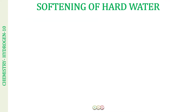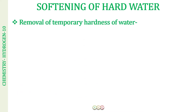We are now going to discuss the softening of hard water — converting hard water into soft water by removing the hardness-causing salts. From this point, everything is going to be very important and new for you, especially for competitive examinations. The first method to remove temporary hardness is by boiling. Temporary hardness is because of calcium and magnesium bicarbonates, and it can be removed by boiling, whereas permanent hardness cannot.